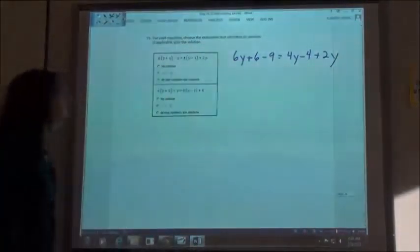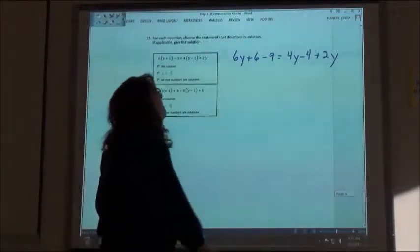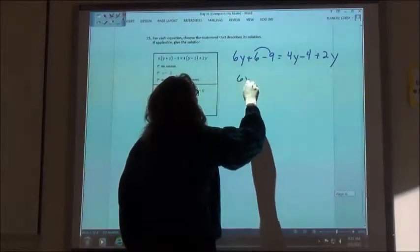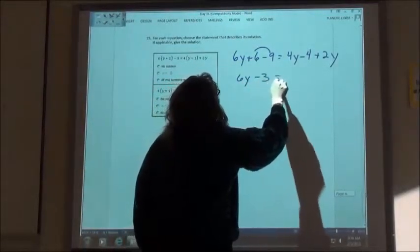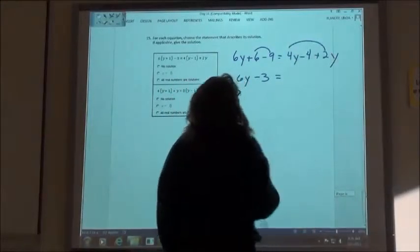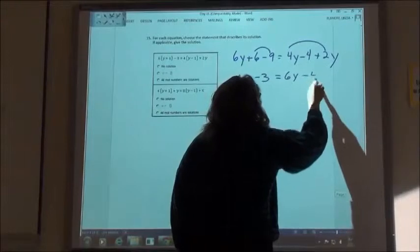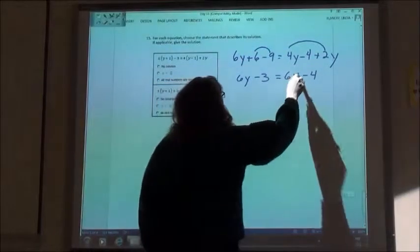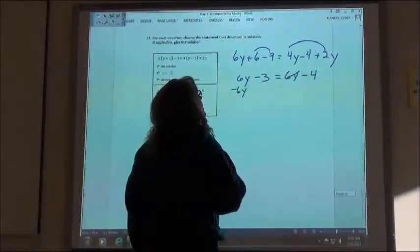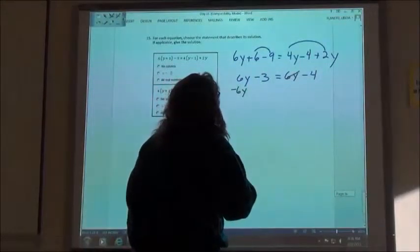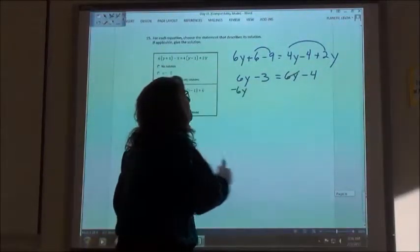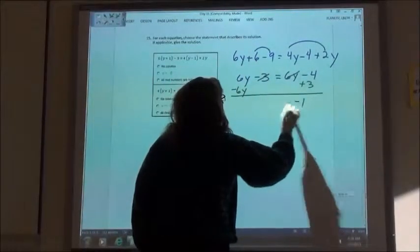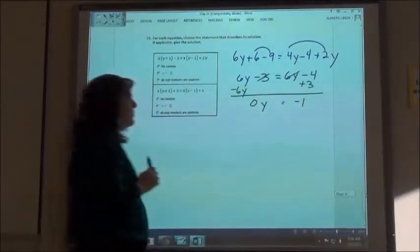Okay. So then you bring your negative 6, your negative 6 becomes, oh no, it becomes a positive. Negative 6, your positive 6 becomes a negative 6y. Yep. And your negative 2 becomes a positive 3. That would be 1, negative 0y equals 1.